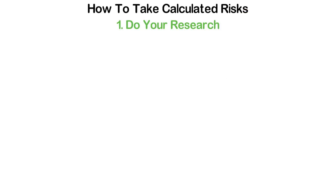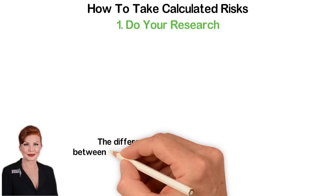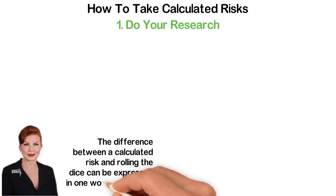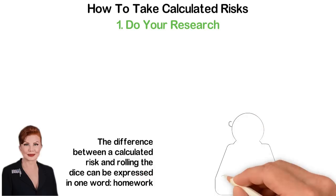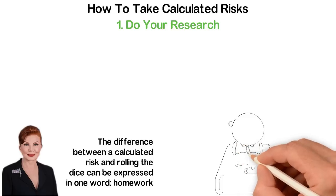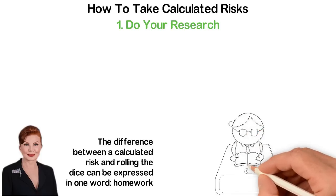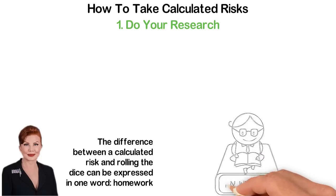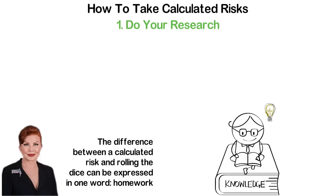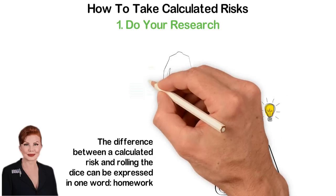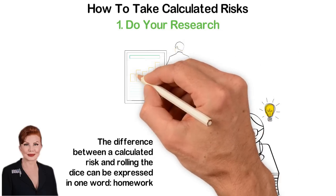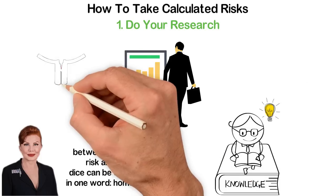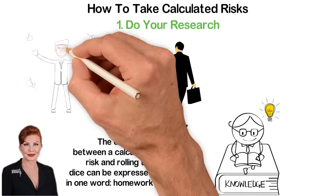Number 1: Do your research. Georgeette Mosbacher said that the difference between a calculated risk and rolling the dice can be expressed in one word: homework. Information makes a difference. Ensure that you do proper research and evaluation. As a matter of fact, gather as much valuable information as possible and identify all the causes of action. Afterwards, list the possible outcomes to weigh your options and understand every little detail and nuance of your decision. Doing this will ensure that you are not driven by emotion or held back by fear. However, if there are too many potential mistakes, it indicates that the risk is too high and you should probably move on to another. Remember, the goal of this is to ensure that you win instead of depending on luck.